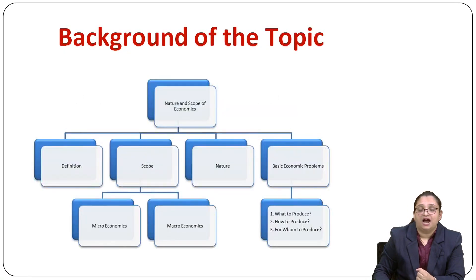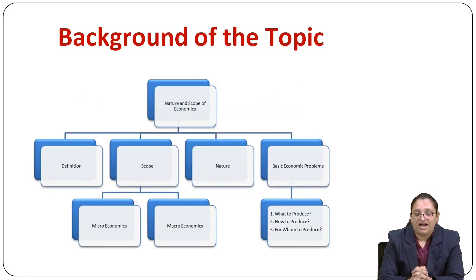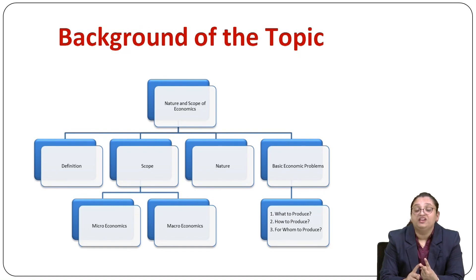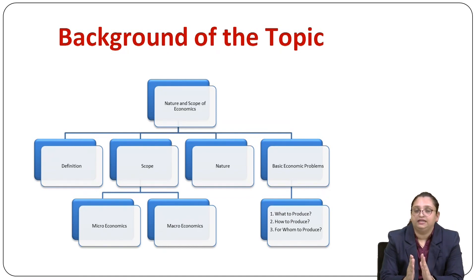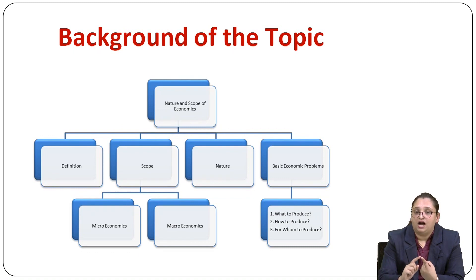Starting with the background of the topic, we are going to discuss the definition and scope. In scope, it is divided into two parts: microeconomics and macroeconomics. Third is nature of economics and fourth is basic economic problems. Basic economic problems are what to produce, how to produce, and for whom to produce.